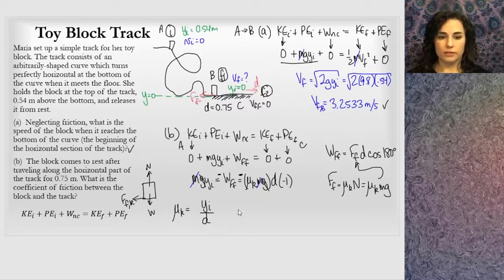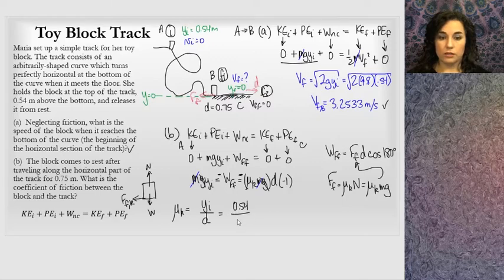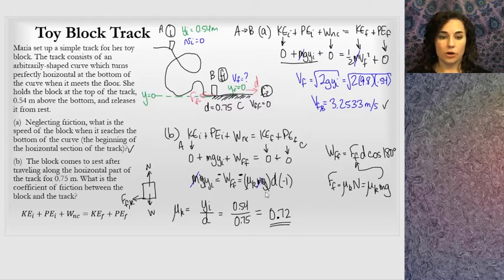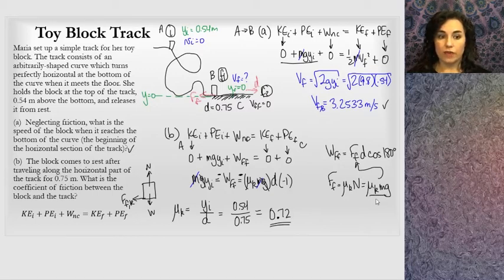Very elegant - M·g's cancel on both sides, the negatives cancel each other out, giving Y initial equals μk times d. So μk equals Y initial divided by d: 0.54 divided by 0.75, which gives a nice exact value of 0.72. That is the coefficient of kinetic friction. That's how you work non-conservative forces into this equation: you put in the work done by the force, knowing the contact force value and how far it acted over - that's why it's non-conservative.